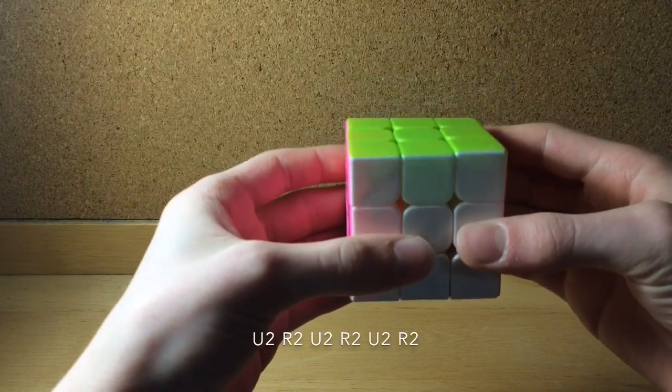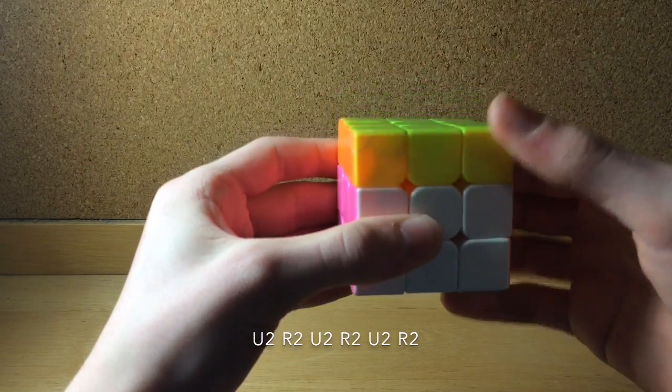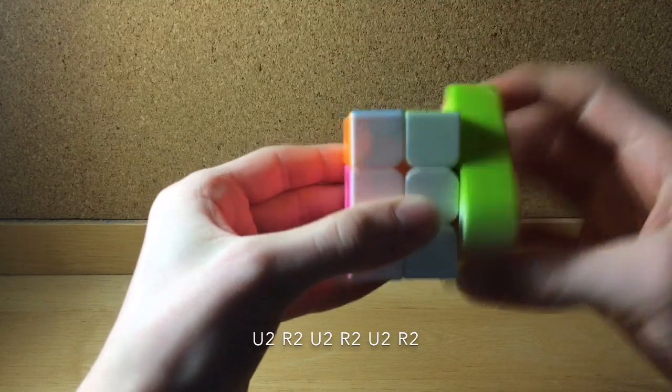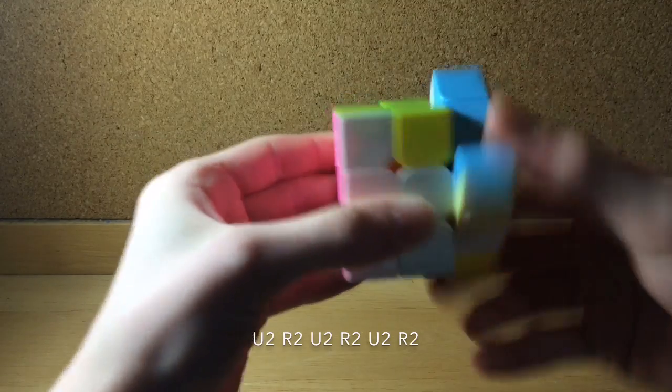So the algorithm goes like this: up up, right right, up up, right right, up up, right right.